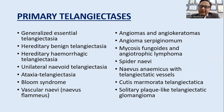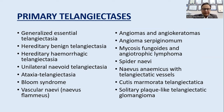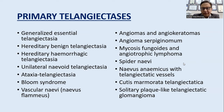Telangiectasias can be classified as primary and secondary. Primary telangiectasias include generalized essential telangiectasias, hereditary benign telangiectasias, hereditary hemorrhagic telangiectasias, unilateral nevoid telangiectasias, ataxia telangiectasia, Bloom syndrome, nevus flammeus, angiomas and angiokeratomas, angioma serpigenosum, spider nevi, nevus anemicus, cutis marmorata, and solitary plaque-like telangectatic glomangiomas.